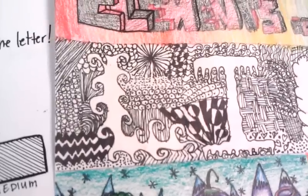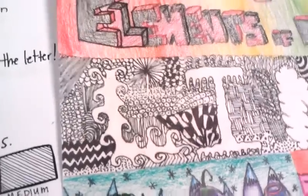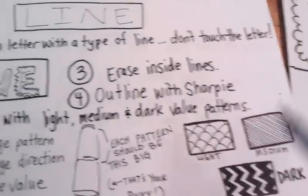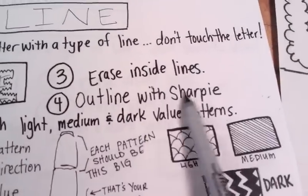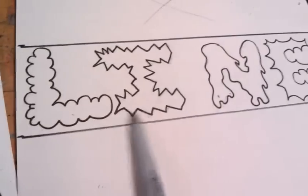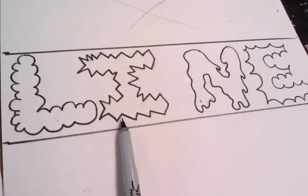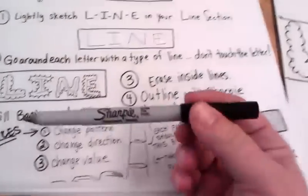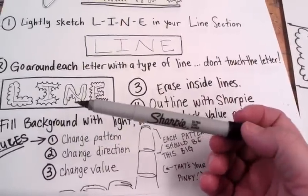Now there's a couple rules that you're going to need to remember when filling in your background. First let me just remind you that you need to outline with Sharpie, and we're going to use a fat Sharpie to outline our line section. The background though, the patterns that we're going to use should be done with a skinny Sharpie, an ultra fine.